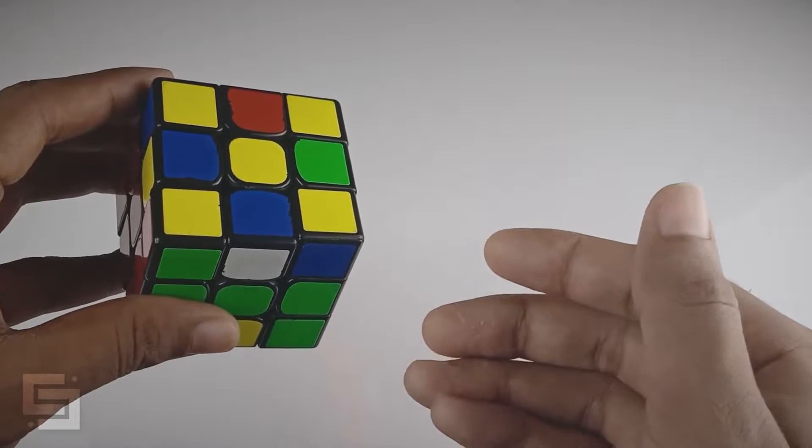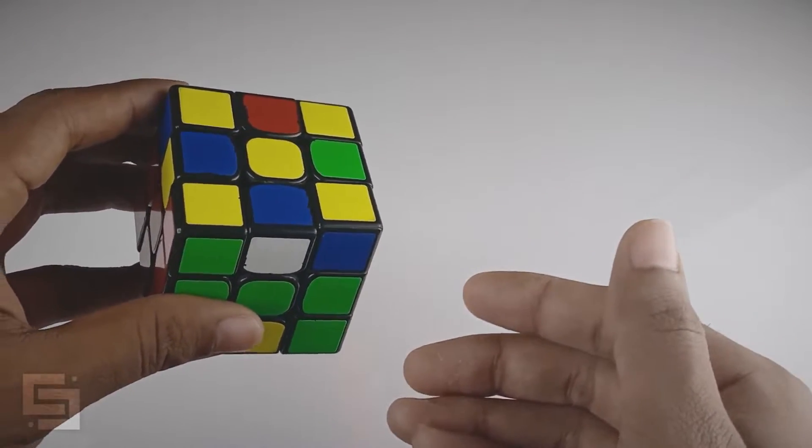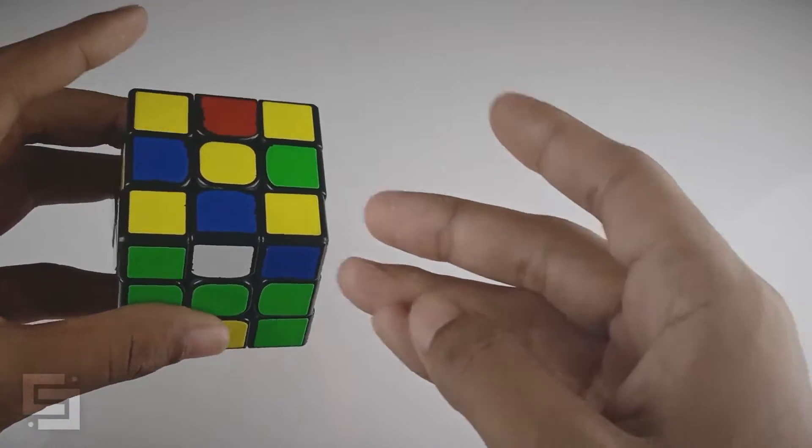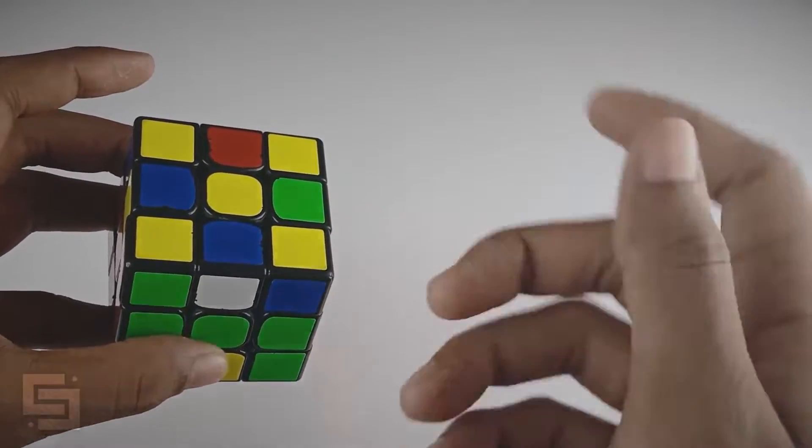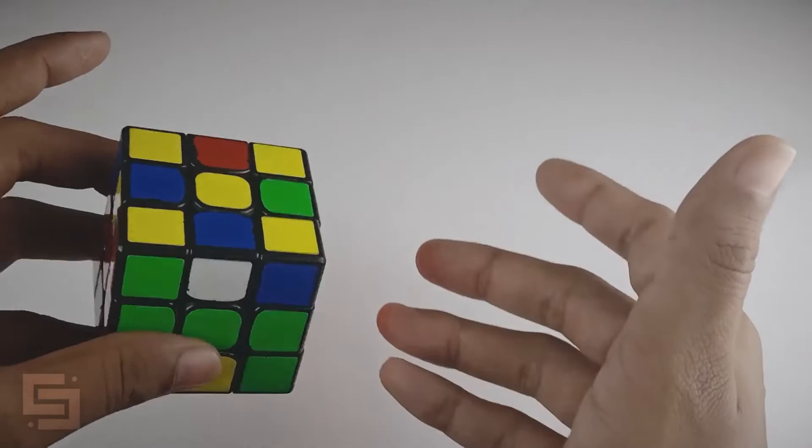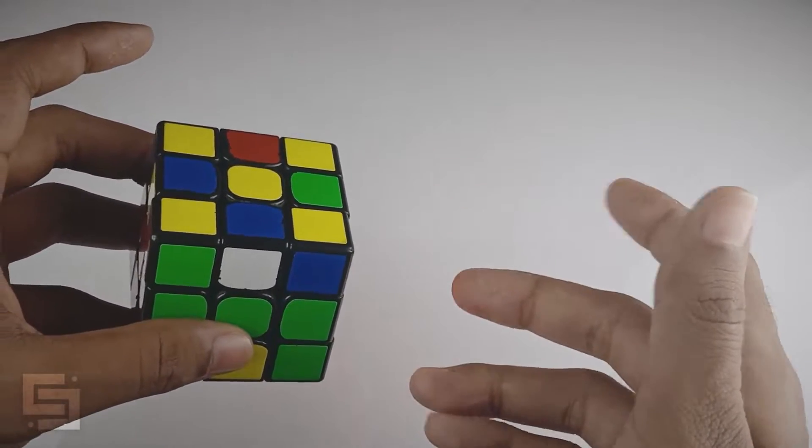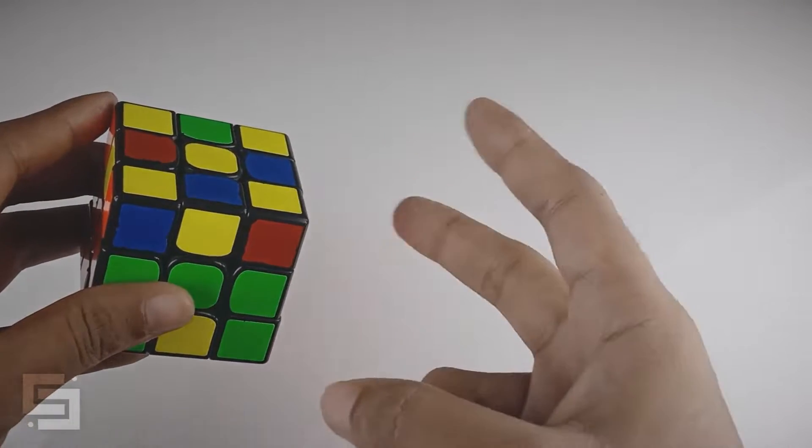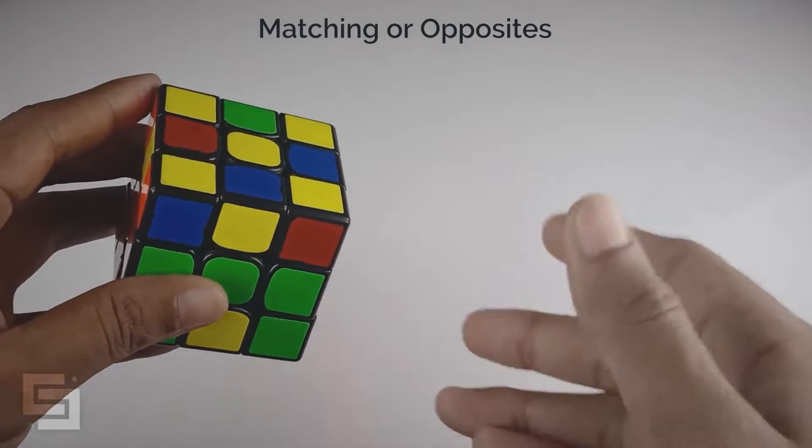Oftentimes for this particular case, I see beginners getting confused. They would frantically do the U moves or look around the cube and try to figure out what case they have, but it does not have to be that difficult or even confusing. The recognition for this case is really simple and we again use 3 stickers for this recognition. There are 2 corners solved cases: the matching case and the opposite case.